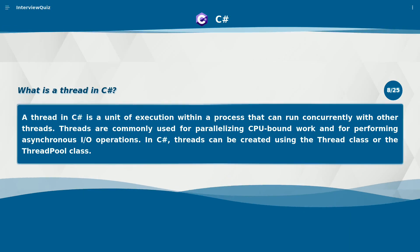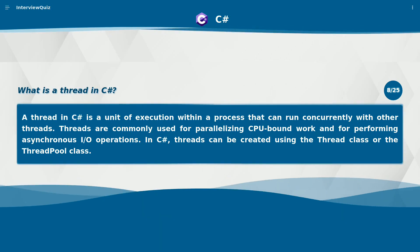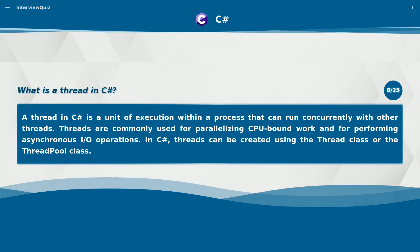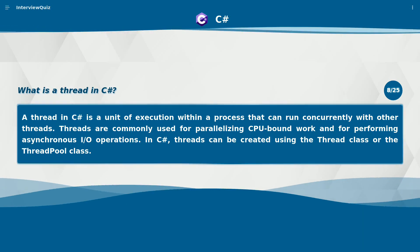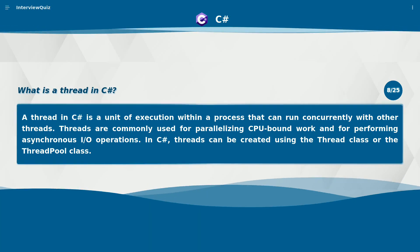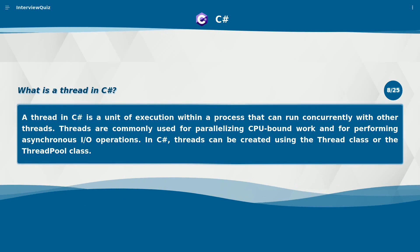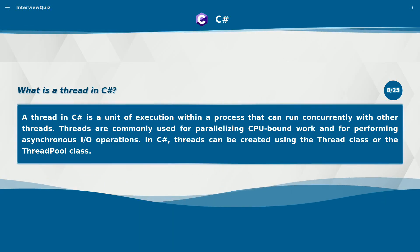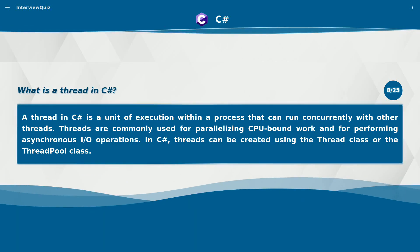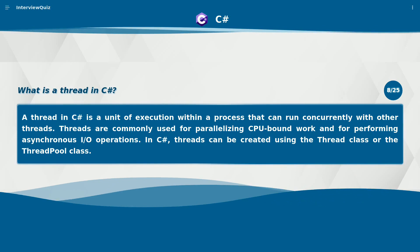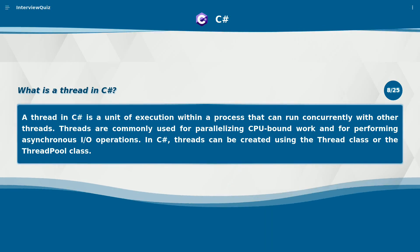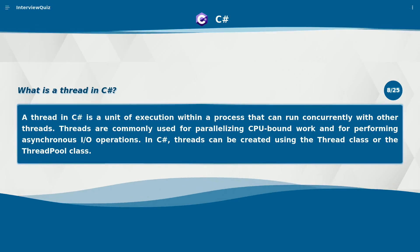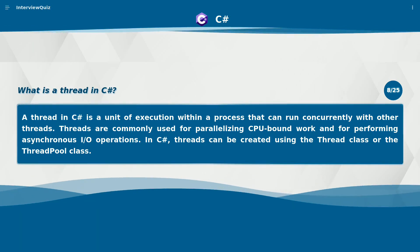What is a thread in C#? A thread in C# is a unit of execution within a process that can run concurrently with other threads. Threads are commonly used for parallelizing CPU-bound work and for performing asynchronous I/O operations. In C#, threads can be created using the Thread class or the ThreadPool class.